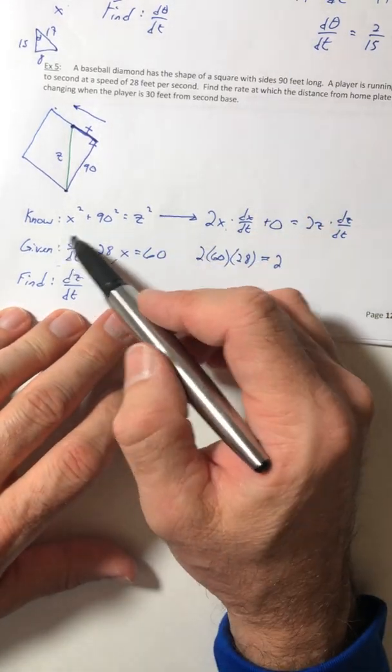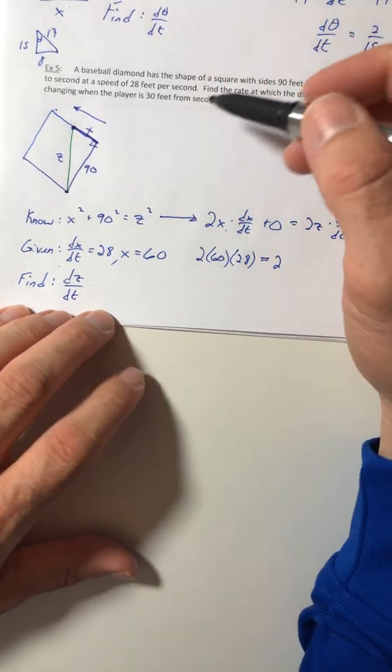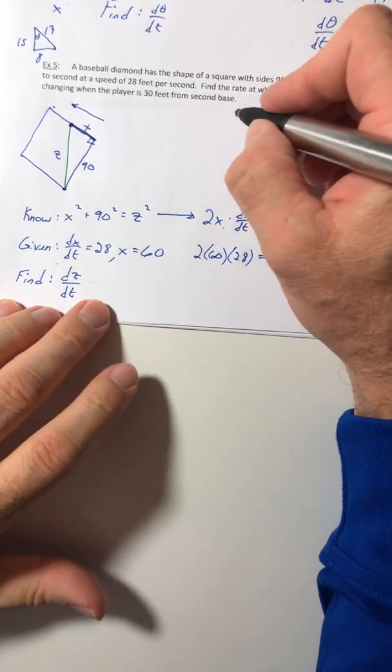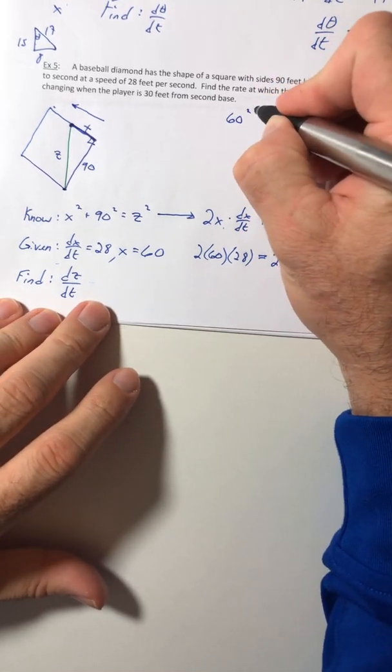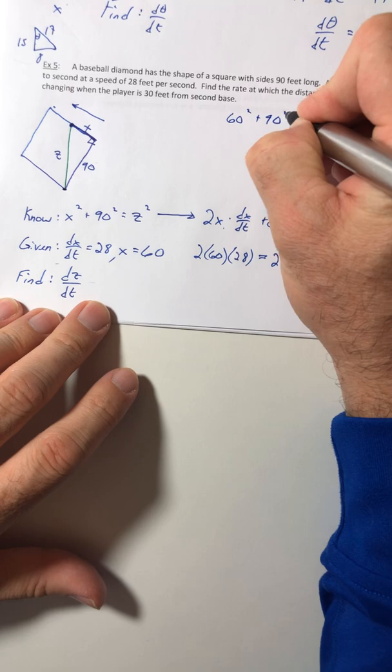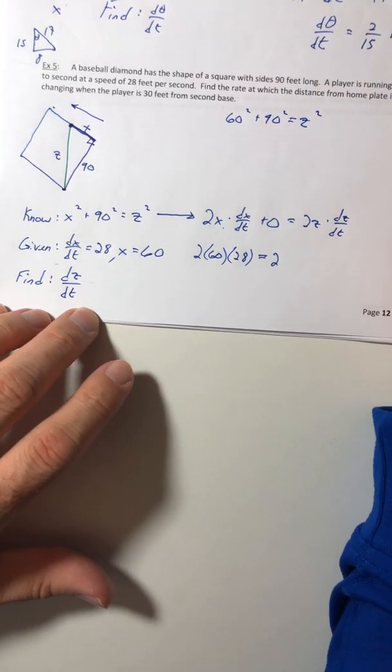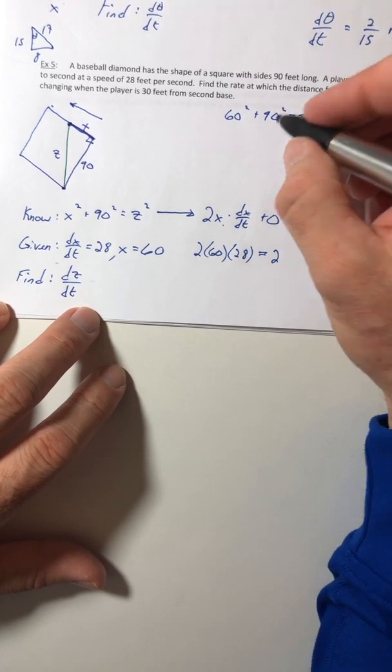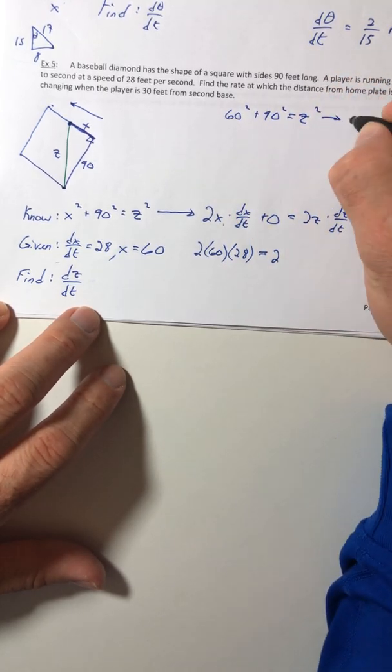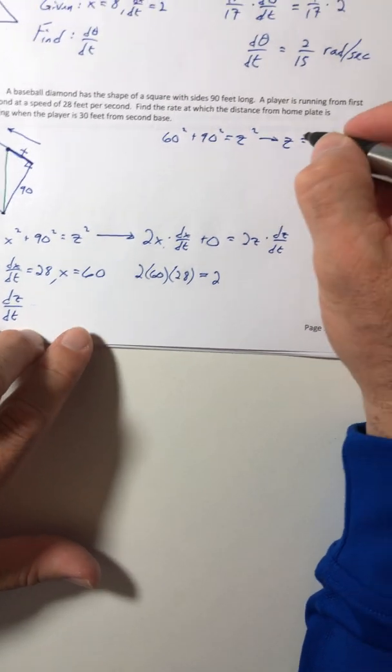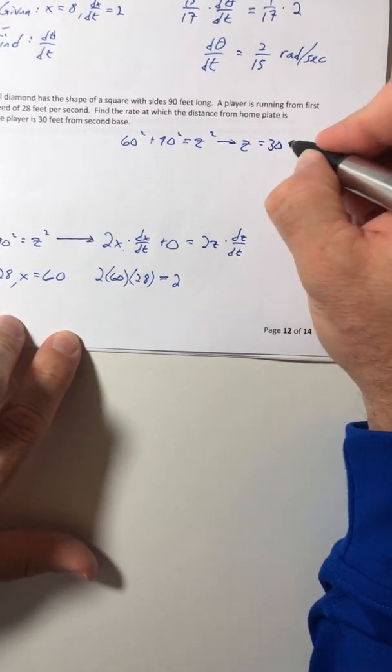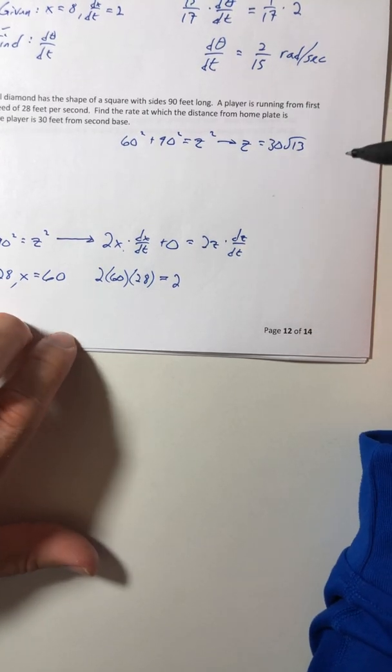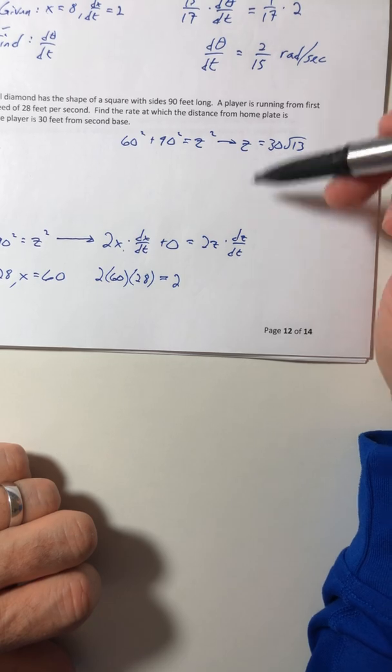Oh hey, we can just use this. You can use the Pythagorean Theorem. So when X equals 60, the Pythagorean Theorem would look like this. So if you squared those, added them together, and square rooted, Z is going to equal 30 root 13. And yes, I would expect you to know how to simplify that. So review your Algebra 1 or Algebra 2 if you need to.